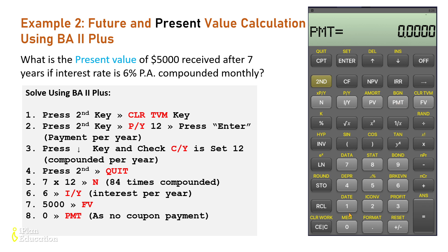Now compute the present value: press the compute button CPT and then PV. The present value comes out to 3288. Again it is showing a minus sign — don't worry about that. Because we entered 5000 as a positive future value, the present value comes out negative by the default setting of the financial calculator.